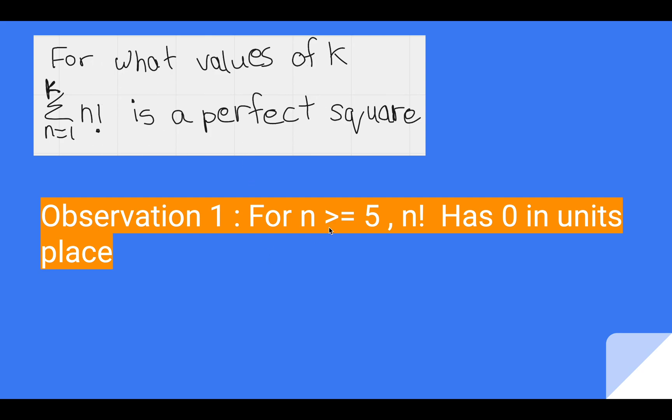So first observation is for n greater than equal to 5, n factorial has 0 in its units place. Right? Because 5 factorial is 120 and any factorial ahead will just get multiplied by 120, so the units place will always remain 0.